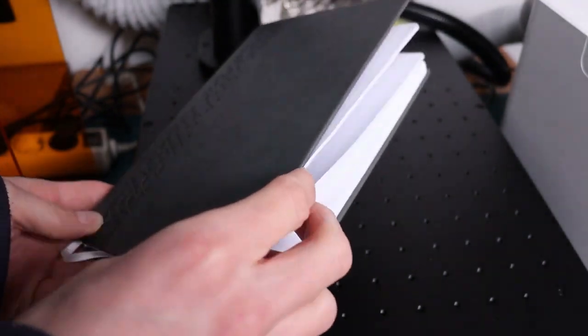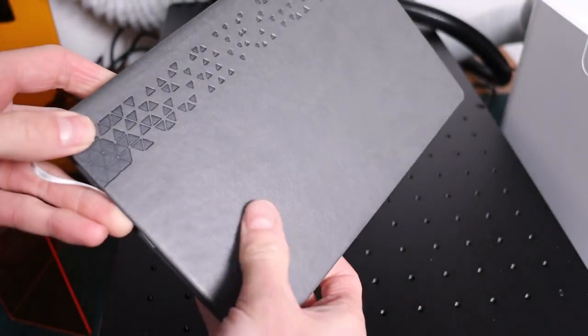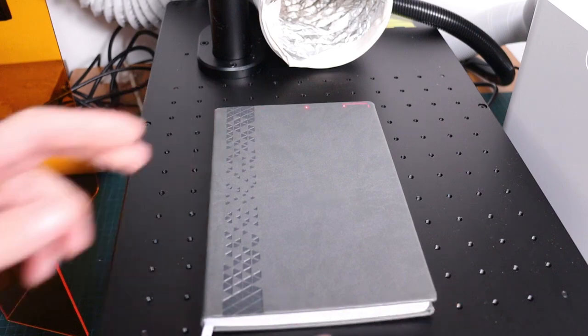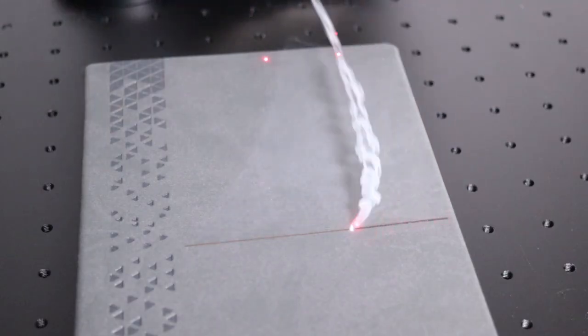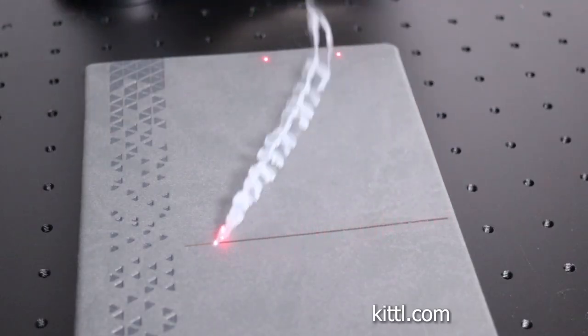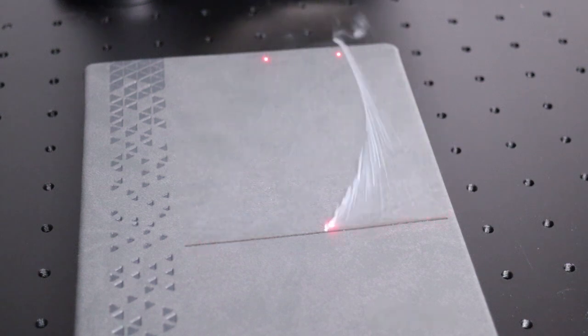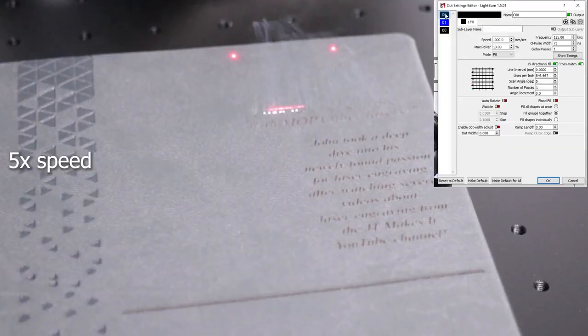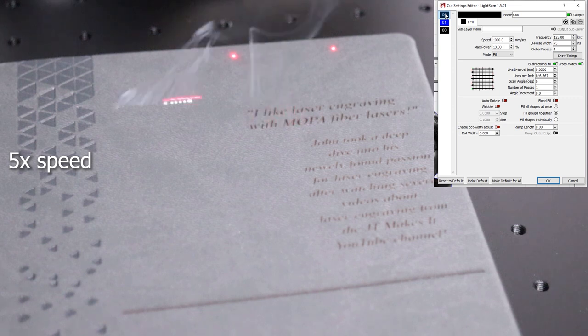Now it's time to do a more practical test by engraving on this notebook, which is wrapped in faux leather looking material. I will engrave a newspaper style front page, which I have made with Kittel Designer. When engraving plastic materials, fume extraction is very important. The text is engraved with a low power crosshatch fill pattern.